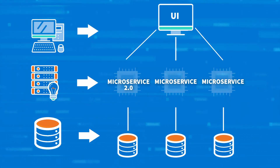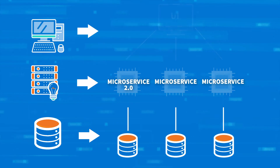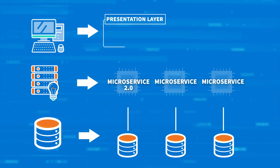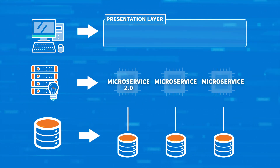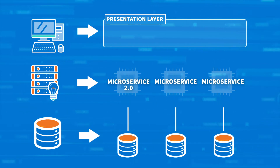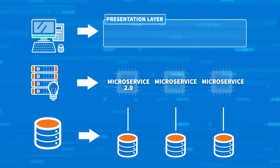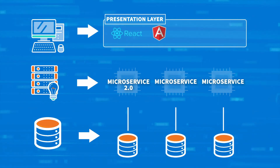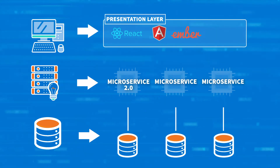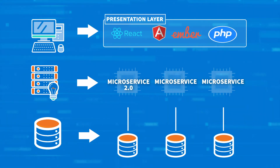The three tiers, or layers, involved include a presentation layer that sends content to browsers in the form of HTML, JS, or CSS. This might leverage frameworks like React, Angular, Ember, PHP, and others.